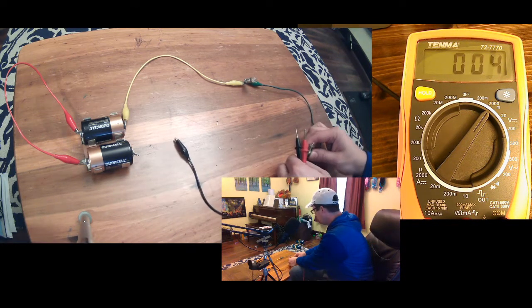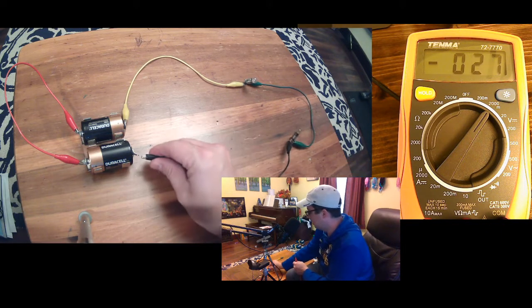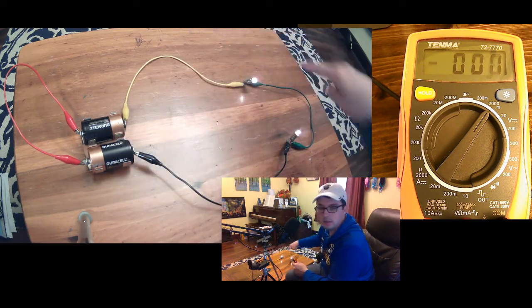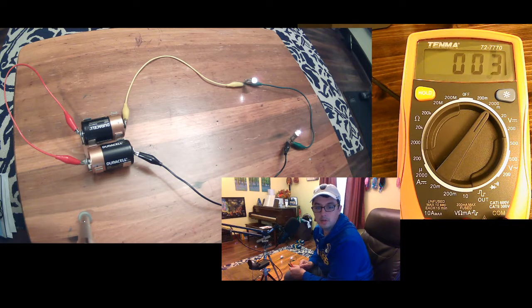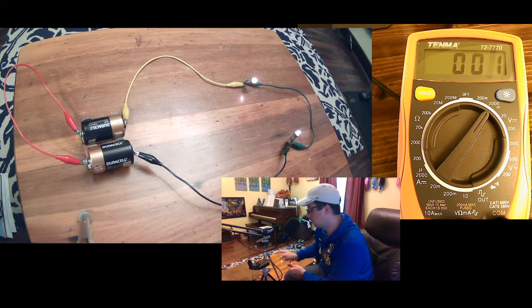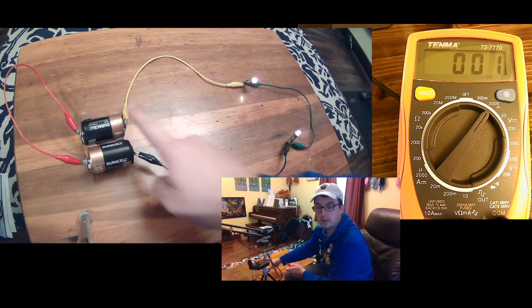All right, so when I connect the circuit, we see that the light bulbs light up, so current is running in the circuit. Let's measure the voltages starting with battery number one from point A to point B.